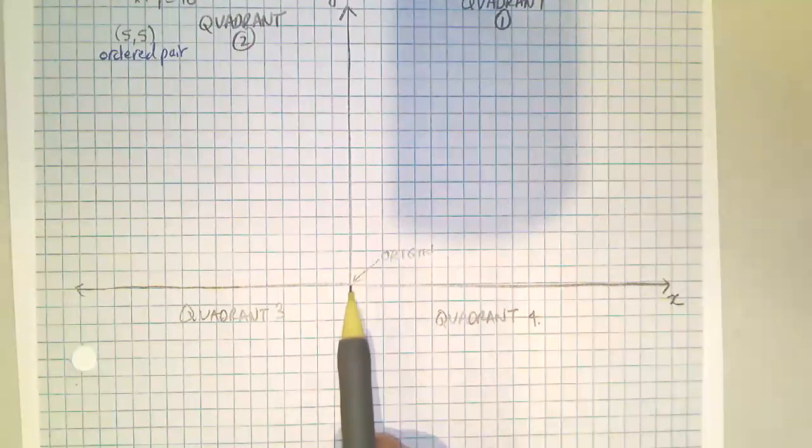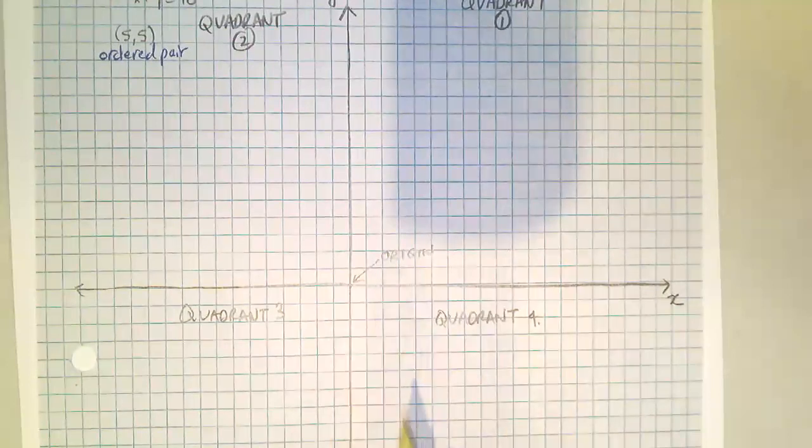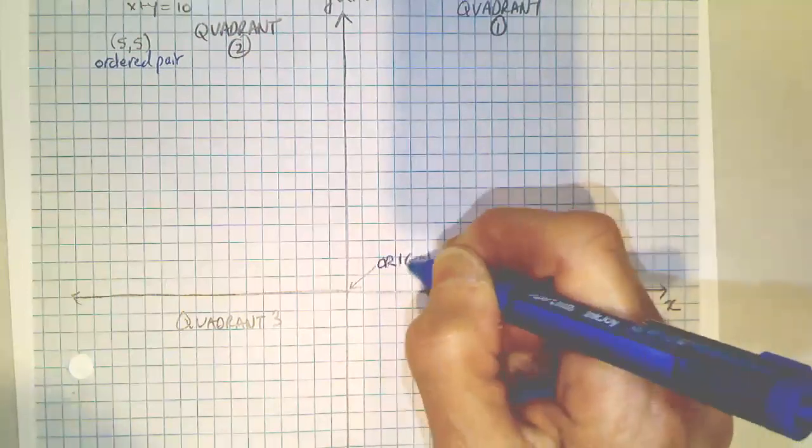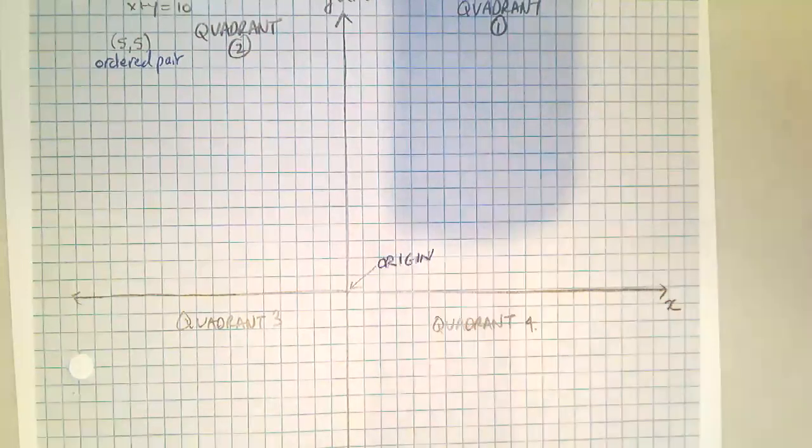This point where the X axis and the Y axis meet is called the origin. Now, what you do, everything starts at the origin. Origin means the beginning.